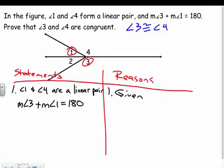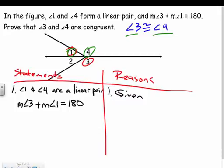What else adds up to 180? Angles one and four add up to 180, which will bring angle four into play. Since I already have angle three, bringing in angle four could get us to what we're trying to prove. But before I can say one and four add up to 180, I need to state that they're supplementary — I can't state they add up to 180 until I know they're supplementary.